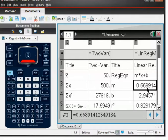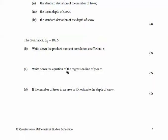The m value is 0.669. The b value — which is our c — is minus 2.946. So because it's a negative value, your equation — your line of best fit — is going to be y = 0.669x − 2.946.